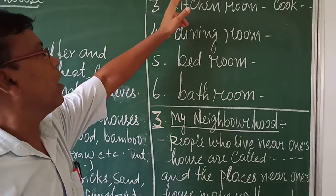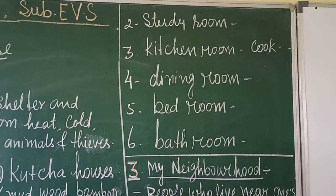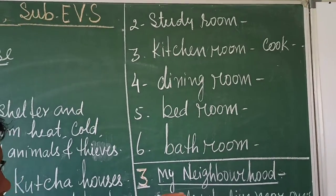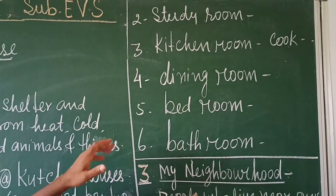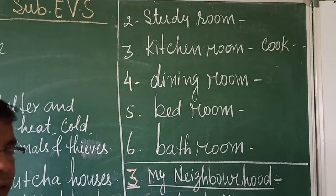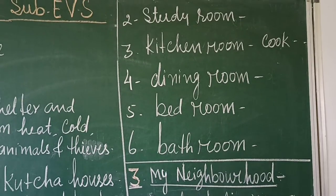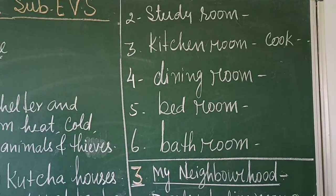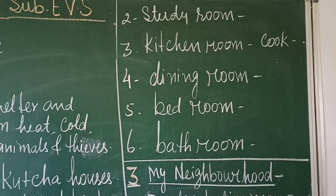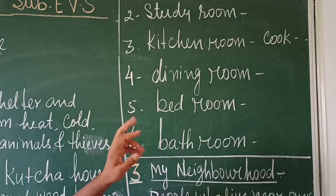Now we will see the study room. In order to study we have a separate room called the study room. In the study room there must be a table and chair where we can sit comfortably and study, read, write, and all these things take place in the study room.